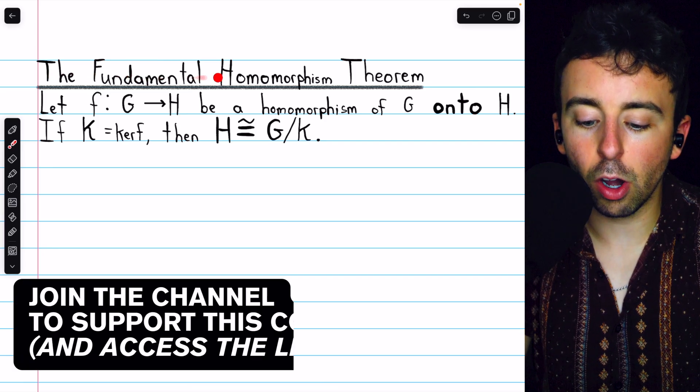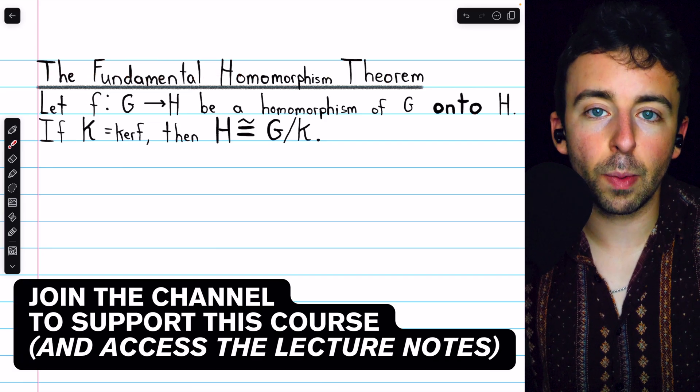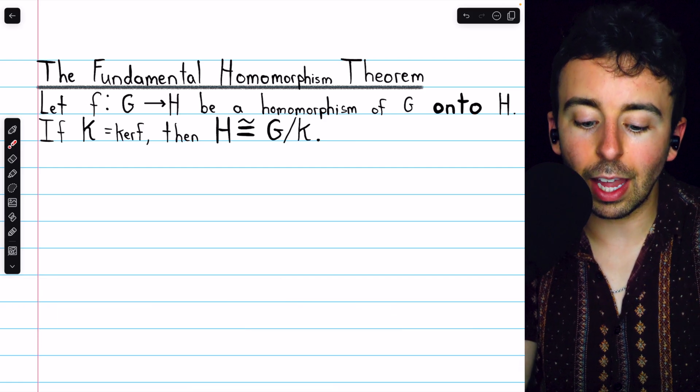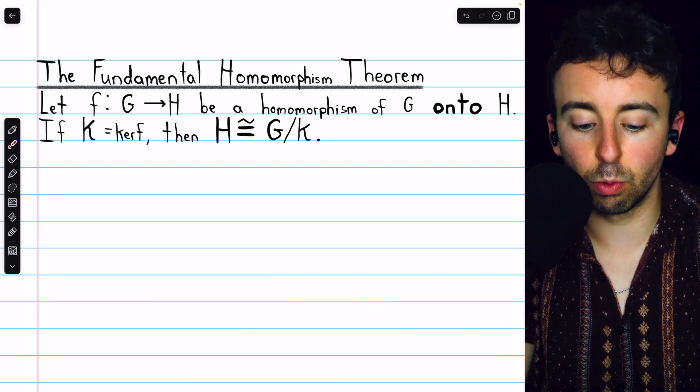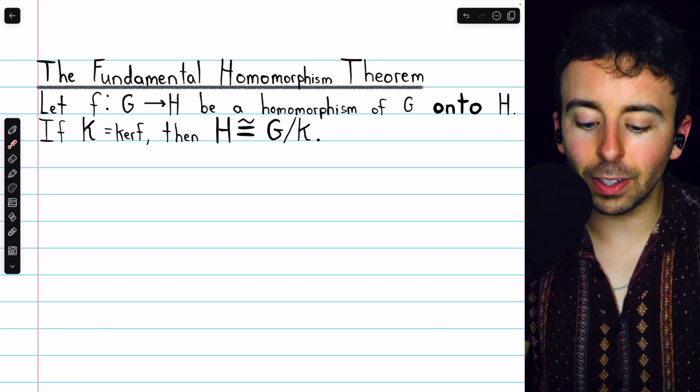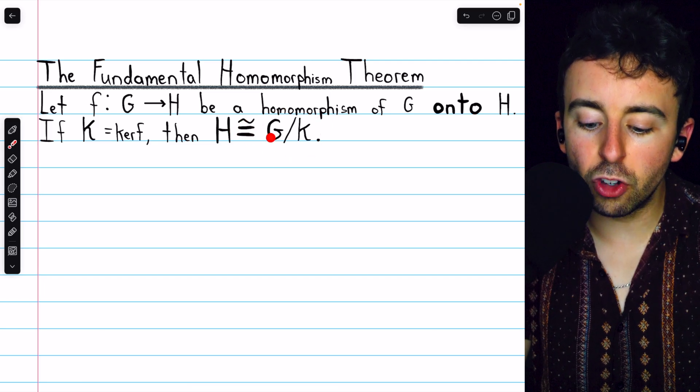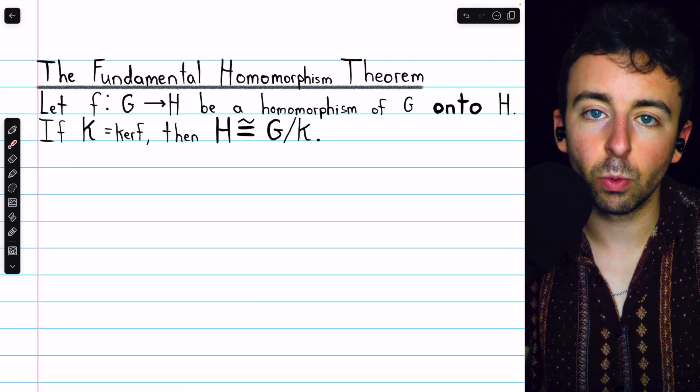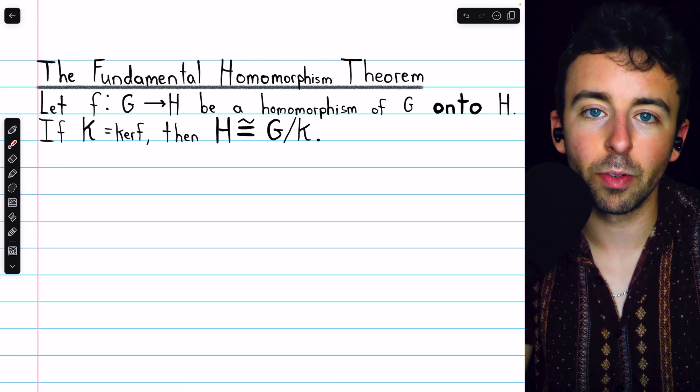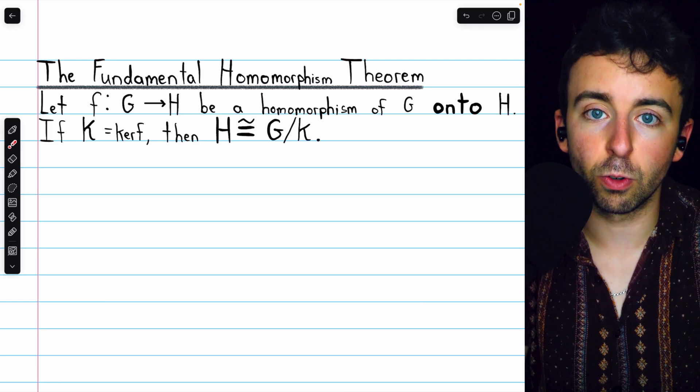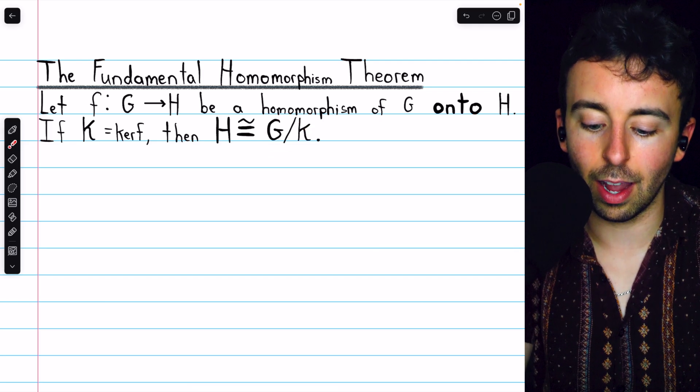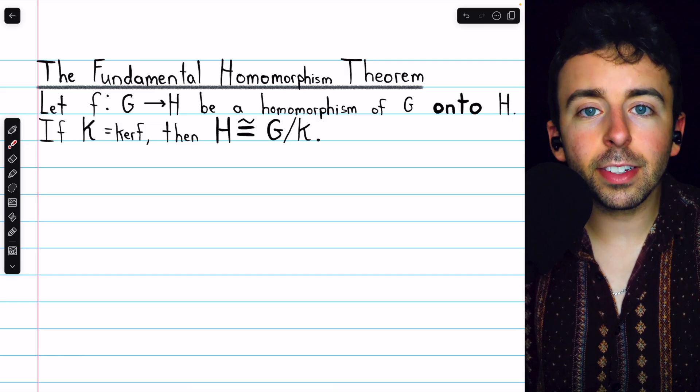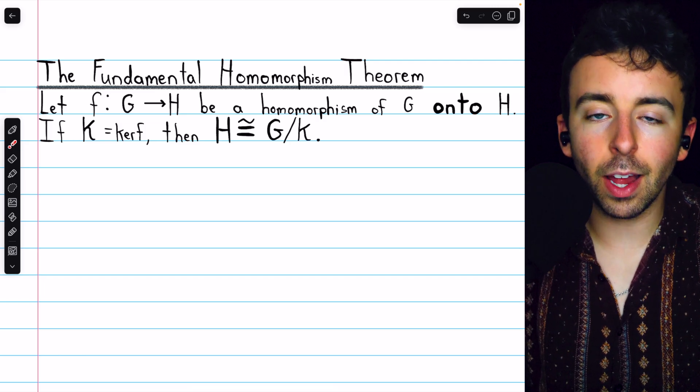We previously proved the fundamental homomorphism theorem, link in the description to that video. This theorem tells us that any homomorphic image H of any group G is necessarily isomorphic to the quotient group of G by the kernel of the homomorphism which takes us onto that homomorphic image. The converse is true as well, every quotient group is isomorphic to a homomorphic image. And now that we know why this theorem is true, let's look at a couple of examples of applying it.